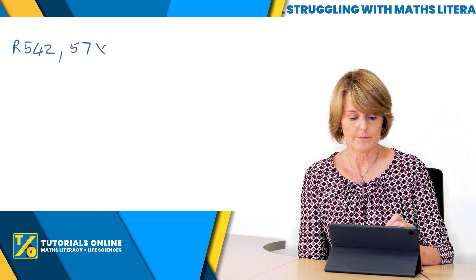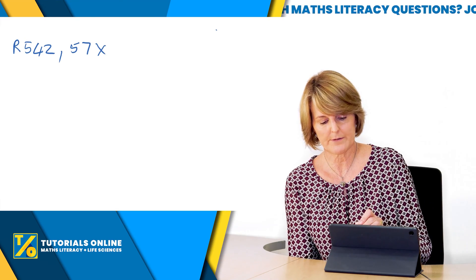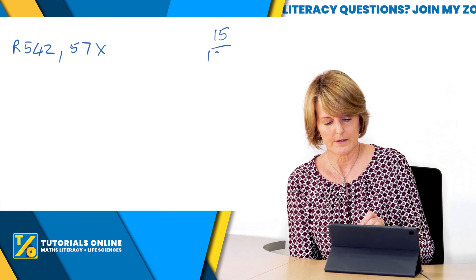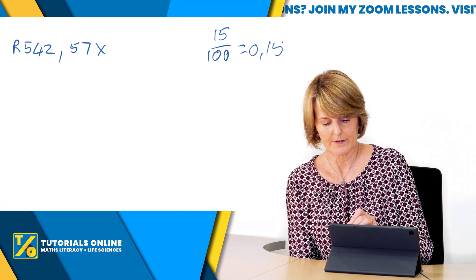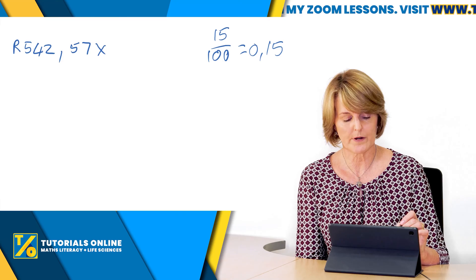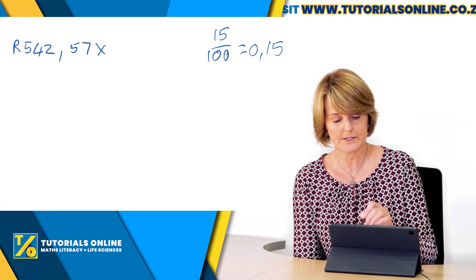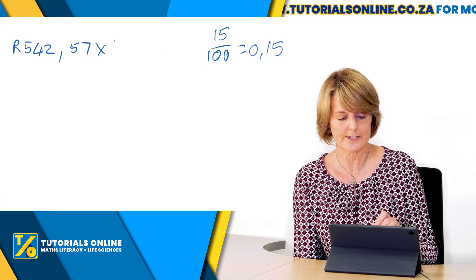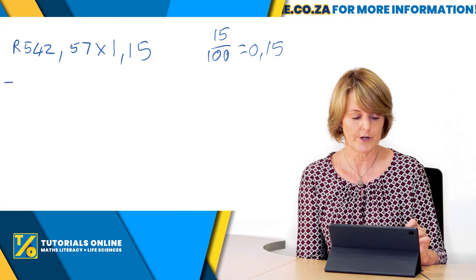If we look here I'm going to say 542 rand 57 times, and now 15 percent is 0.15, but because we're multiplying and we want to increase that by 15 percent, we want to have that plus 15 percent, you're actually going to say times 1.15.